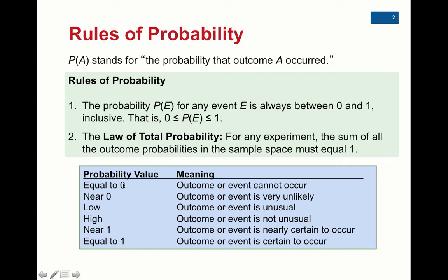We also want you to be comfortable with certain probability values and what they mean. When the probability of something equals zero, we say it's impossible — like rolling a seven on a die. If it's near zero, we say it's very unlikely. If the probability is 0.05 or less, we say the event is unusual. If it's high, like 0.87, we say the event is not unusual. When we get near one — like 90% and up — we're feeling pretty confident that event will happen. And if it's equal to one, it's a 100% chance; we're sure it will happen.